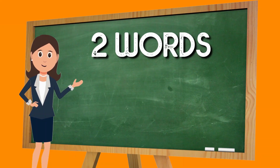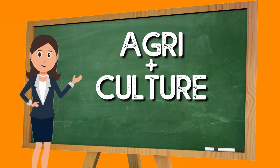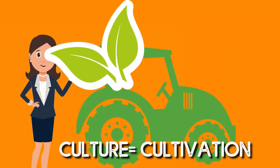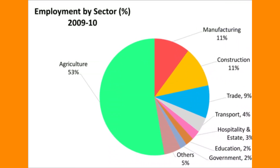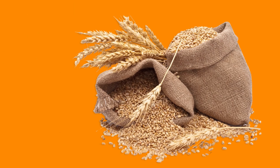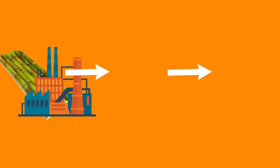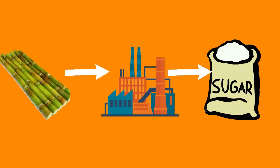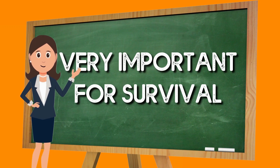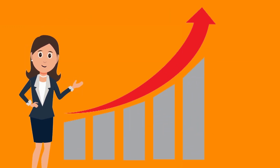Agriculture is two words: agri plus culture. Agri means land and culture refers to cultivation. In India, two-thirds of the population are engaged in agriculture. It provides our food and also supplies raw materials to the industry, which is why agriculture is a very important sector for our survival and for our economy.